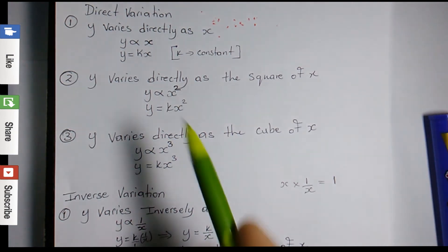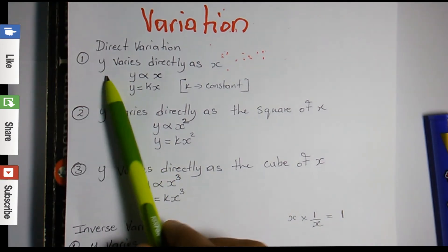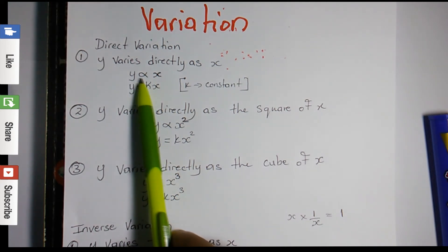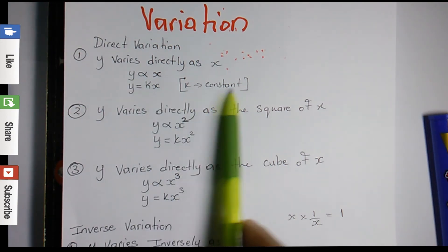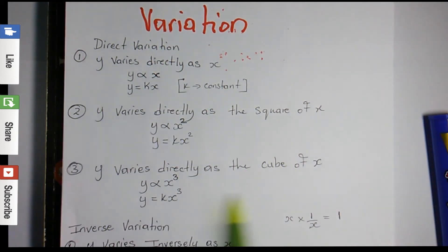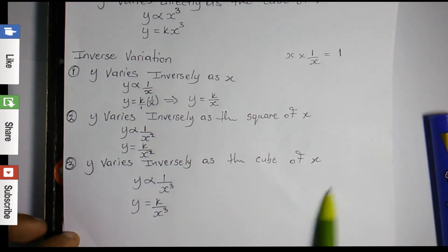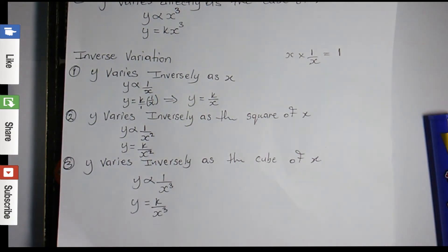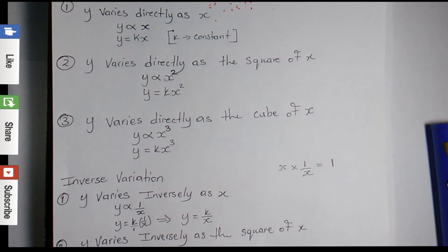To recap: we have two types of variation — direct and inverse. 'Y varies directly as x,' where the variation sign is changed to an equal sign by introducing a constant k. There are three basic word phrases for direct variation and three for inverse variation. You need to learn how to convert these from variation to equations. In the next video I'll solve some possible exam questions based on these.